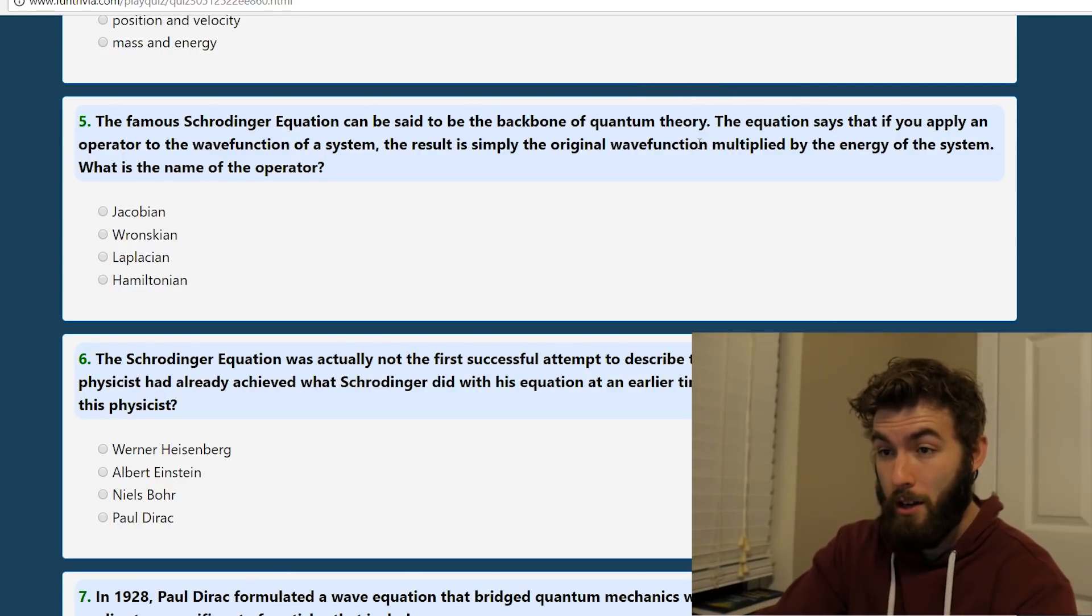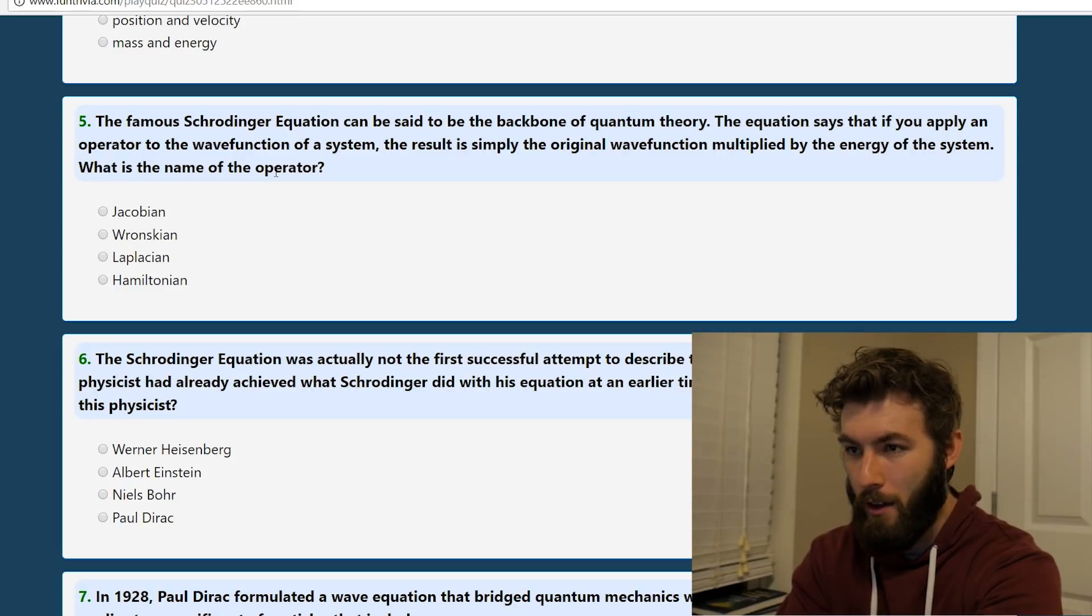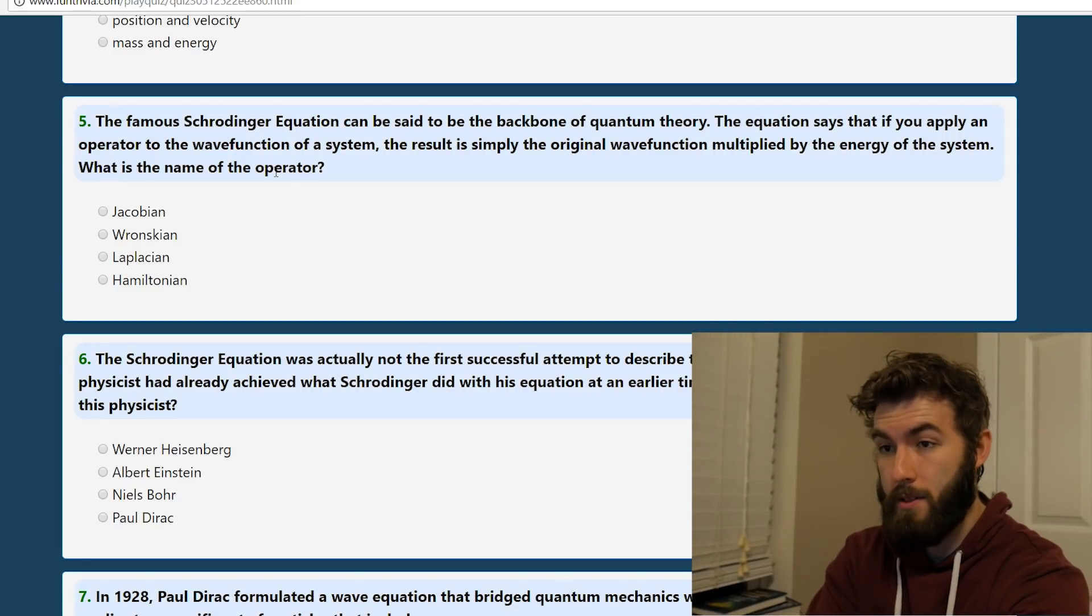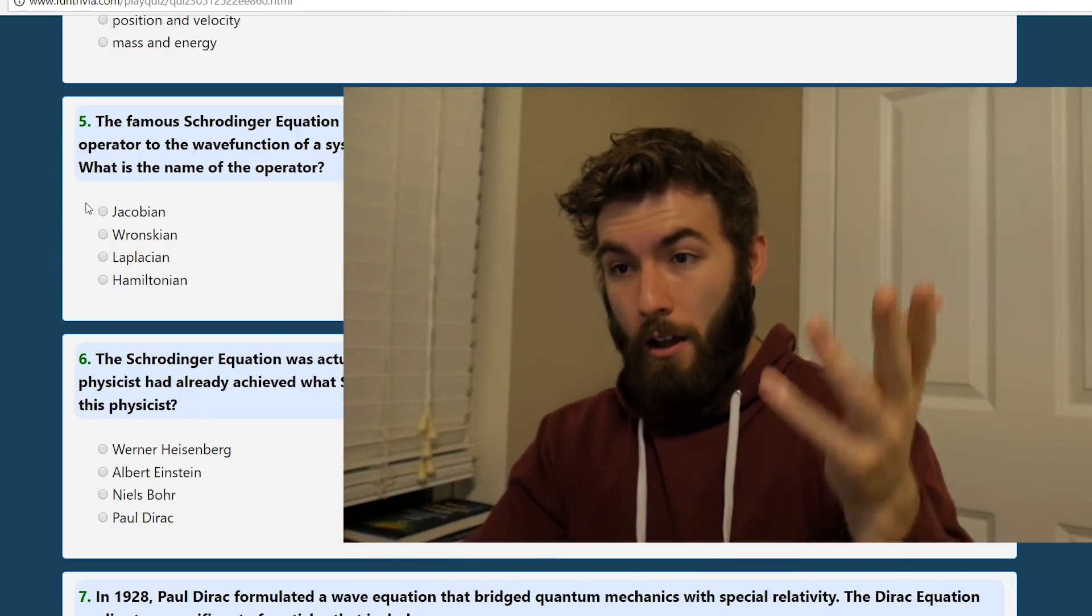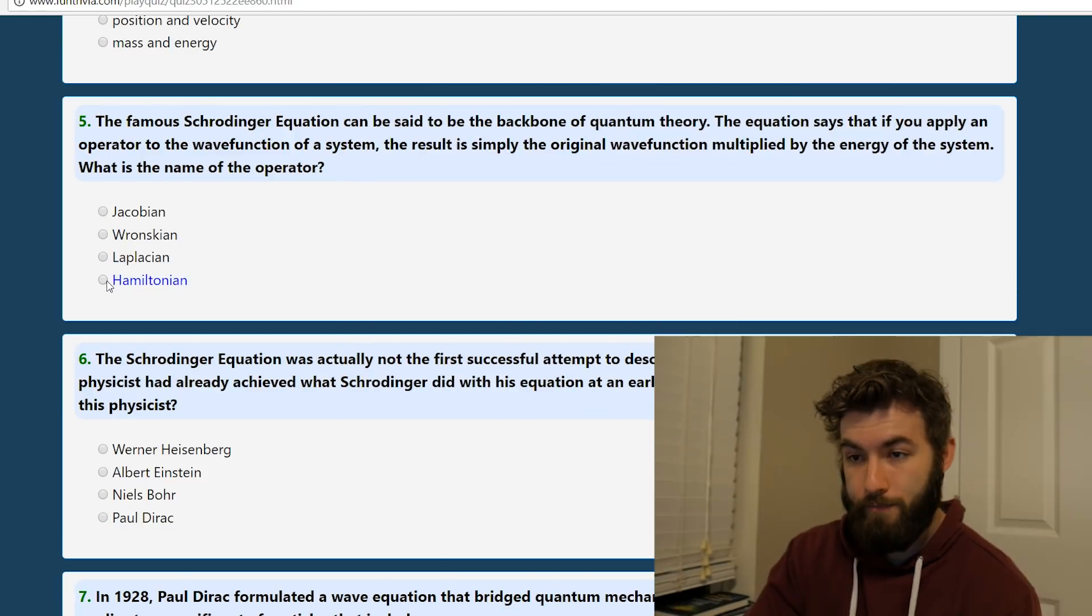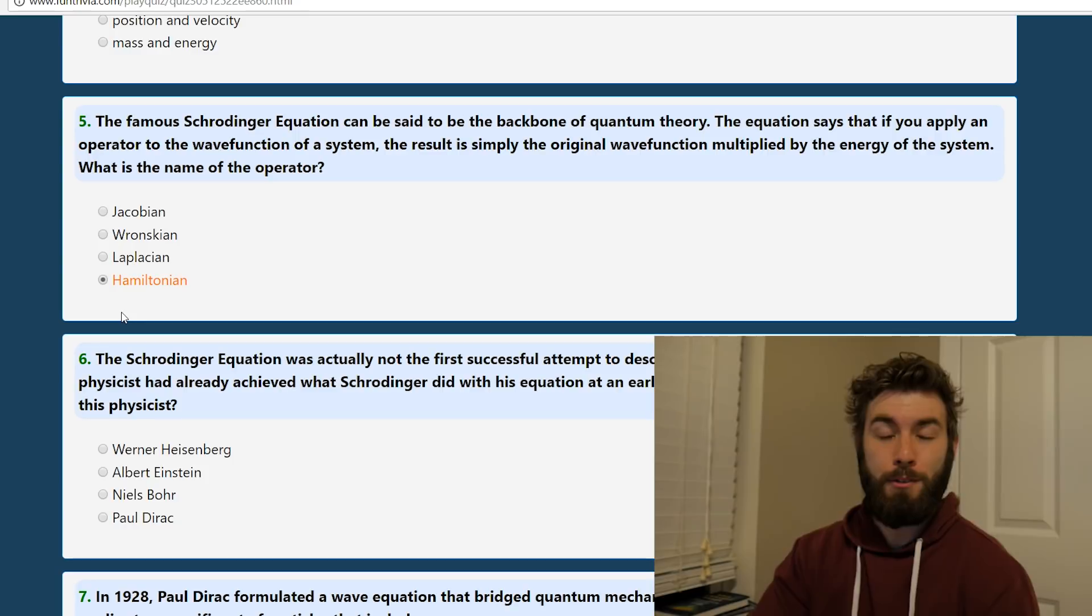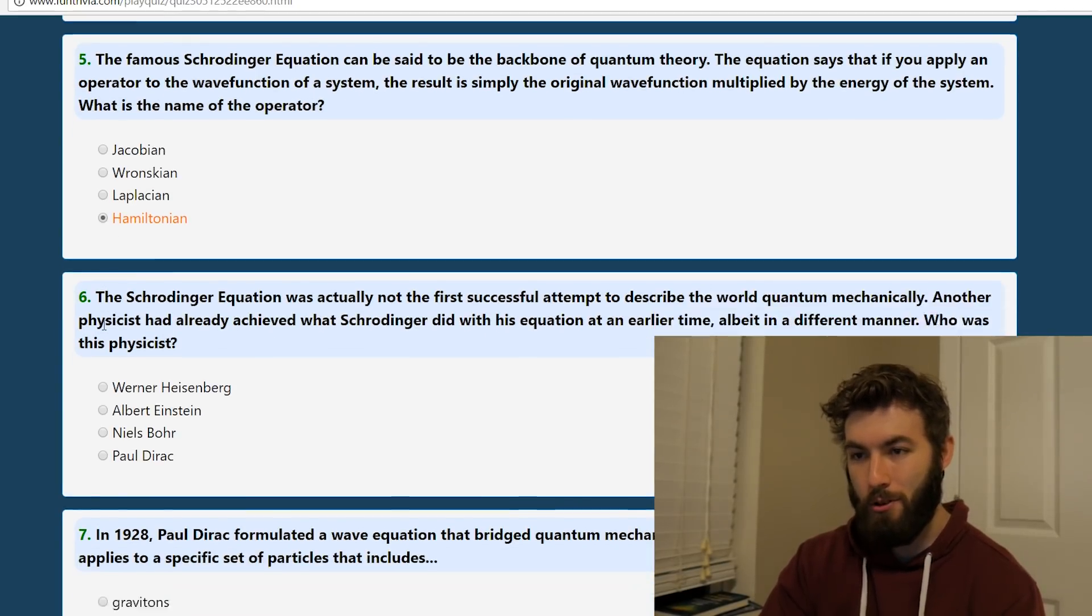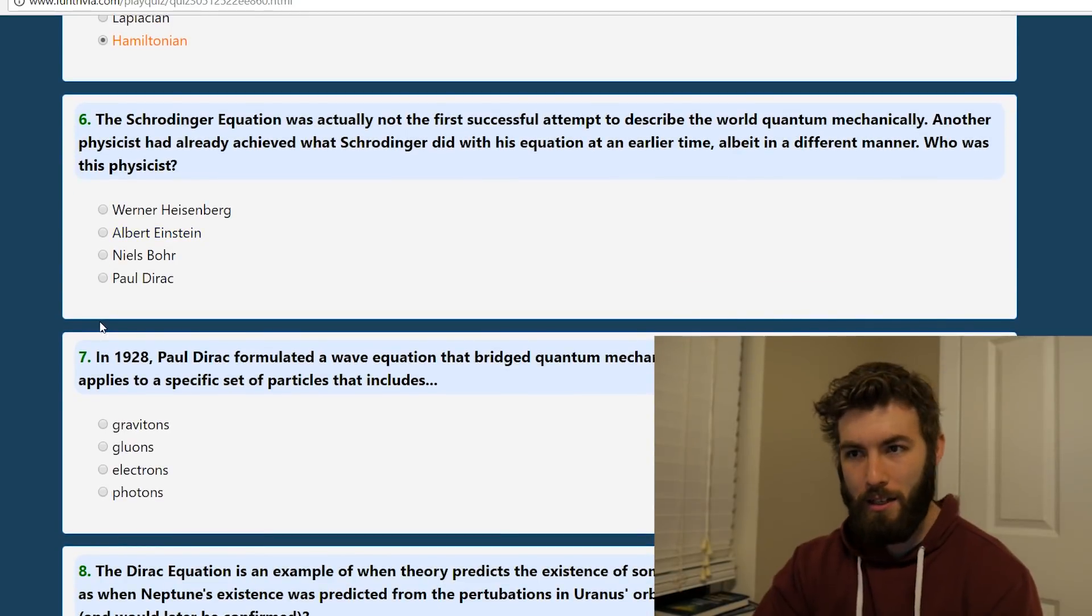The famous Schrodinger equation can be said to be the backbone of quantum theory. The equation says that if you apply an operator to a wave function of a system, I feel like I was talking about this earlier, the result is simply the original wave function multiplied by the energy of the system. What is the name of the operator? Let's say it together, the Hamiltonian. It's kind of a tricky question because in the Hamiltonian, the Hamiltonian's built out of sort of like the Laplacian and some potential. But I guess, yeah, Hamiltonian's more encompassing, I guess.